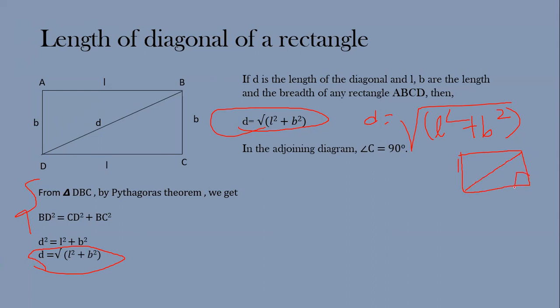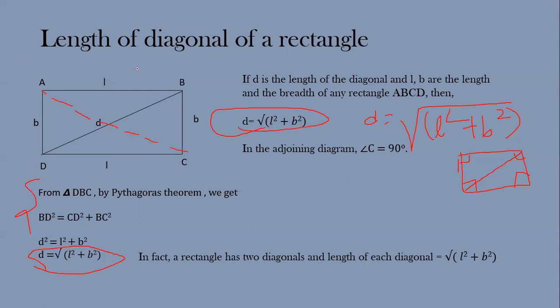We can apply Pythagoras's theorem here because each and every angle of a rectangle is 90 degrees. So BD² = CD² + DC², which gives d = √(l² + b²). In fact, a rectangle has two diagonals, and the length of each diagonal is equal to √(l² + b²). We can see that both BD and AC are diagonals of the rectangle.